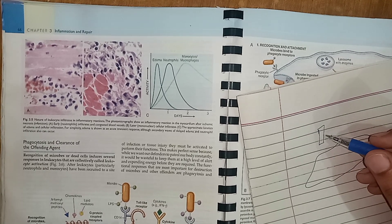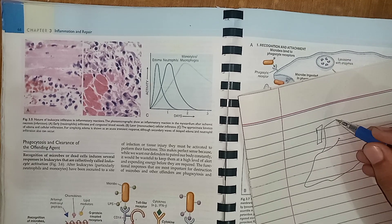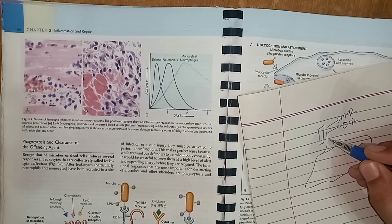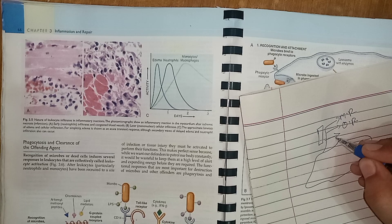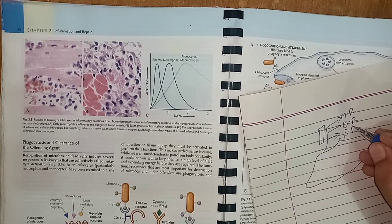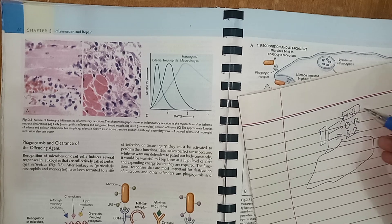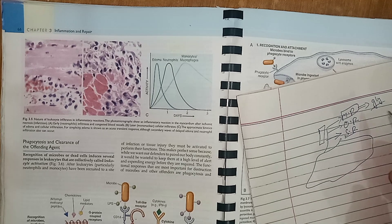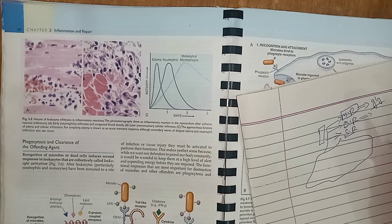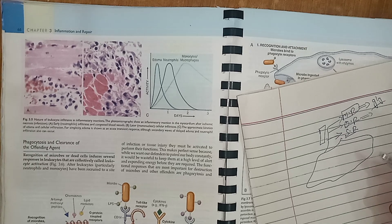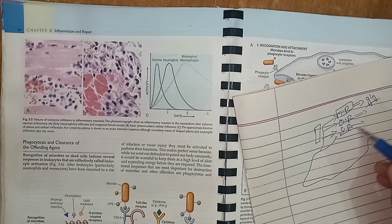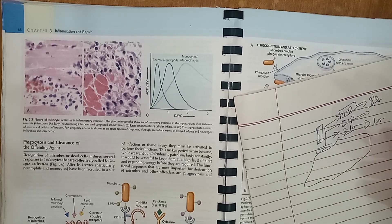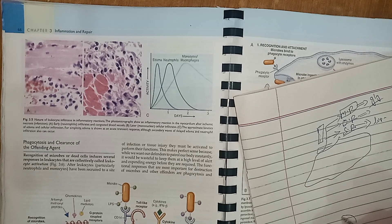The first step is recognition of the microbe by the leukocytes, which happens via various receptors. These receptors include mannose receptors, opsonin receptors, and scavenger receptors. Mannose receptors identify specific glycoproteins and glycolipids of bacterial cell walls. Opsonin receptors identify specific opsonin proteins produced in the complement system. Scavenger receptors identify specific microbes as well as lipid particles.